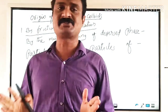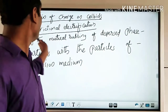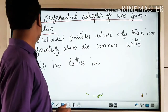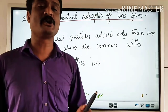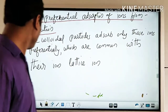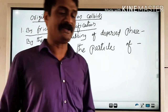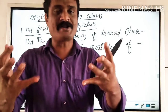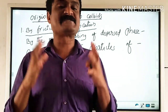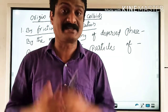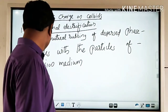Colloidal particles acquire charge either by frictional electrification or by preferential adsorption of ions from solution. By frictional electrification, it is believed that colloidal particles acquire charge by the mutual rubbing of dispersed phase particles with the particles of the dispersion medium.